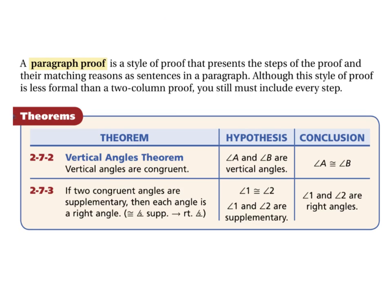We now have another kind of proof called a paragraph proof. A paragraph proof presents the steps of the proof and their matching reasons as sentences in a paragraph. Although this style is less formal than a two-column proof, you still must include every step.